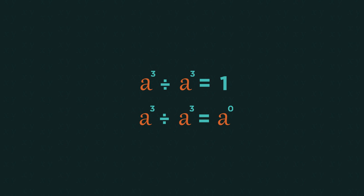We've done the same calculation in two different ways. Therefore, the two answers must equal one another. So combining these two things, anything to the power of zero equals one.